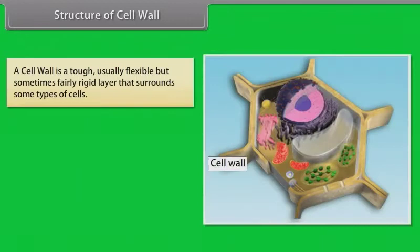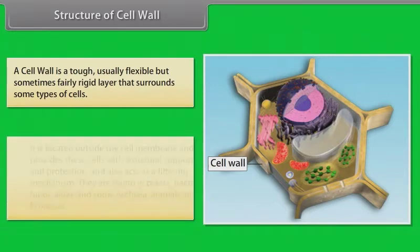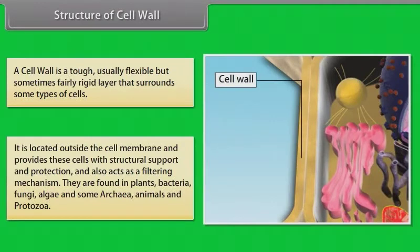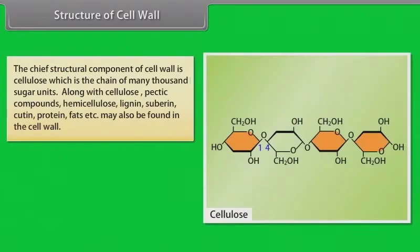Structure of cell wall. A cell wall is a tough, usually flexible but sometimes fairly rigid layer that surrounds some types of cells. It is located outside the cell membrane and provides these cells with structural support and protection, and also acts as a filtering mechanism. They are found in plants, bacteria, fungi, algae, and some archaea. The chief structural component of the cell wall is cellulose, which is a chain of many thousand sugar units.